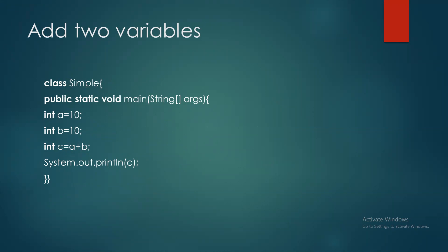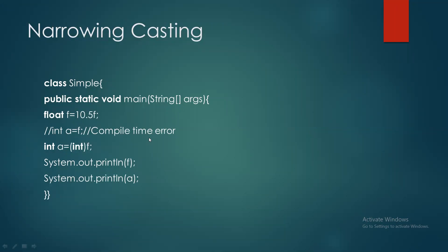Variables کو print کروانے کی مثال: class Simple بنائی، main function لکھا، int a = 10، int b = 10 declare کیا۔ دو numbers add کر کے print کروانا ہے — int c = a + b declare کیا۔ System.out.println سے c کی value print ہو جائے گی۔ یہ simple program ہے جس میں دو numbers add کروائے ہیں — ابھی user سے نہیں لیا۔